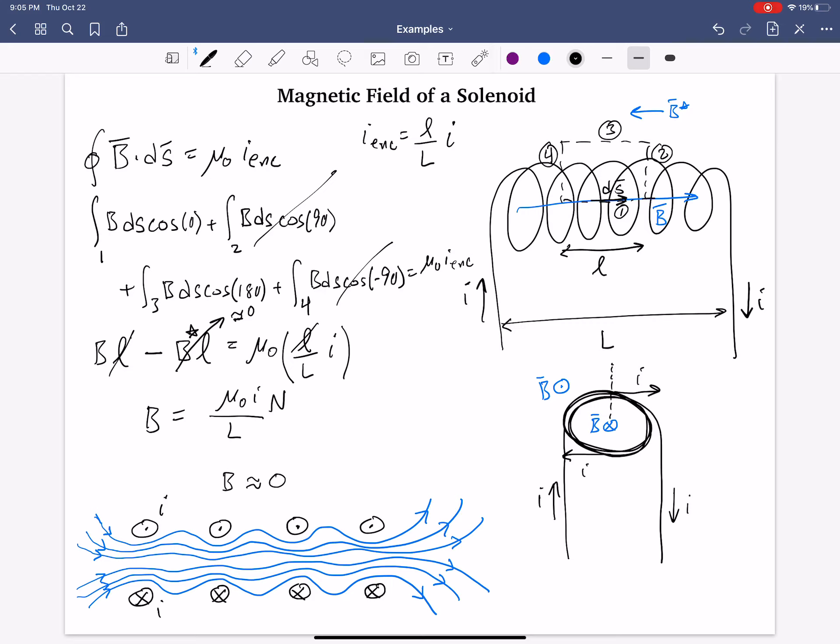This solenoid is of total loops N. And so, you can also write this as mu naught times I times lowercase n, which is typically known as the number density, the number of loops per total length. Right? And this is the magnitude of a magnetic field inside a solenoid with a current I. Right? And the direction, again, is to the right.